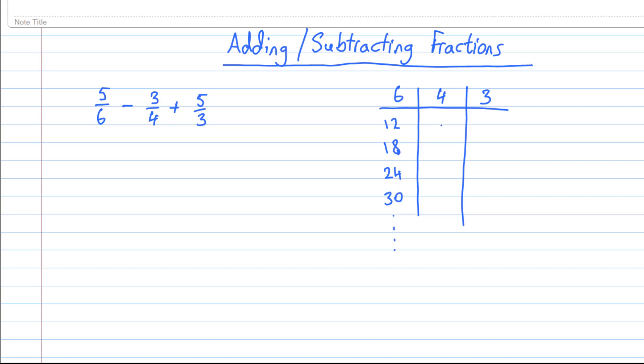For 4, we have 8, 12, 16, 20, 24, 28—you can stop at some point. And for 3, the multiples of 3, we start with 3 and then 6, 9, 12, 15, 18, 21, and so on.